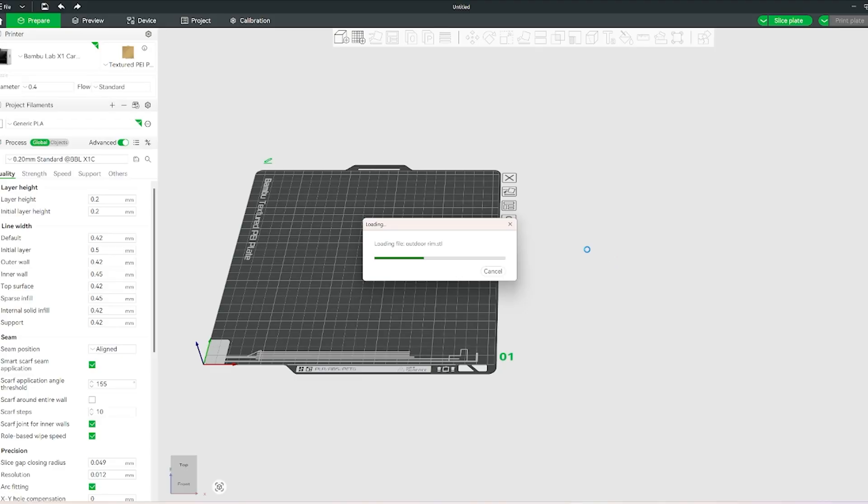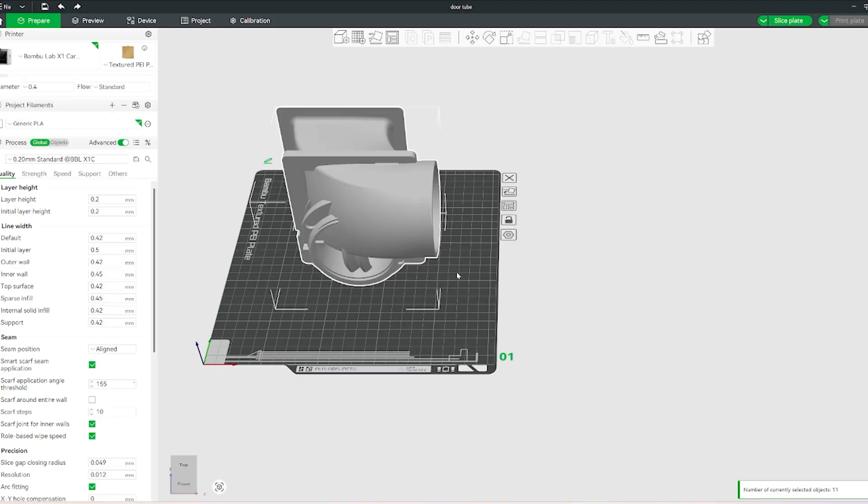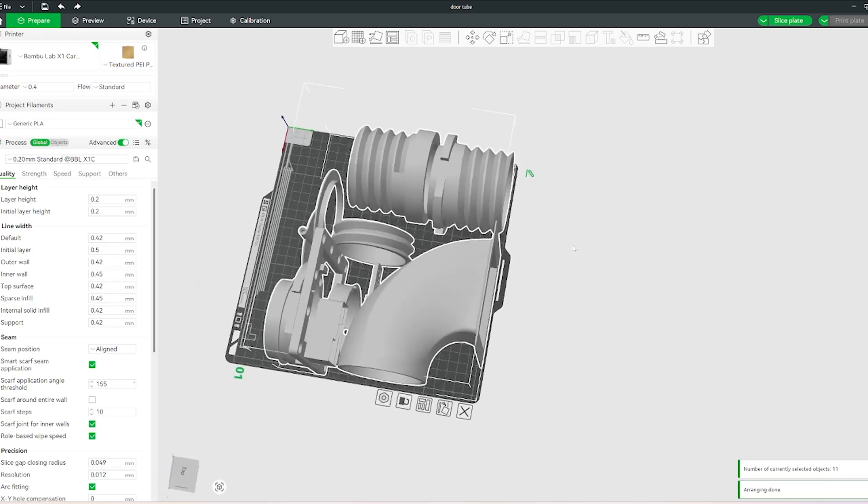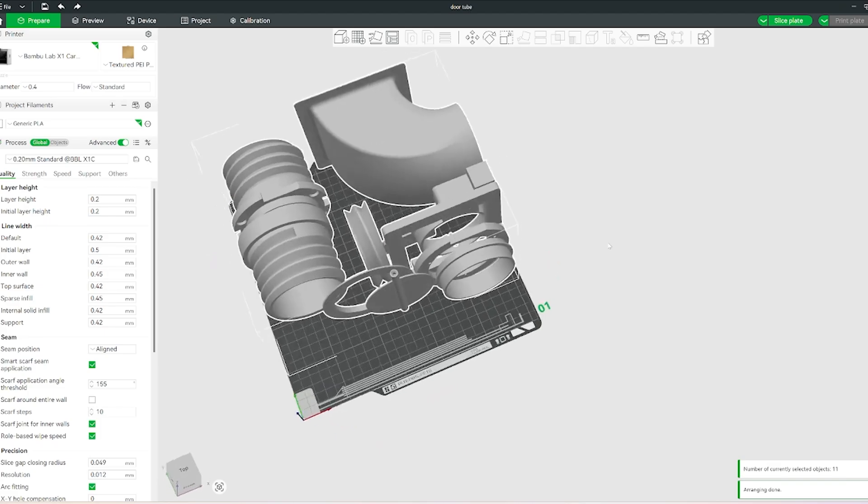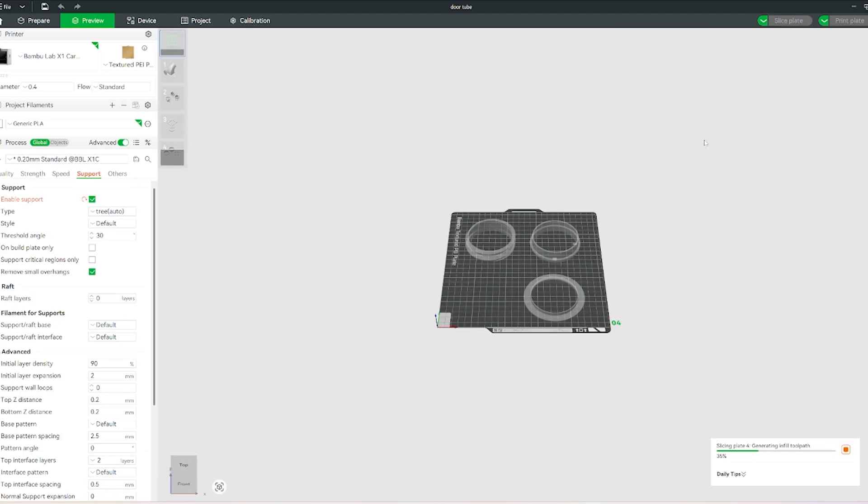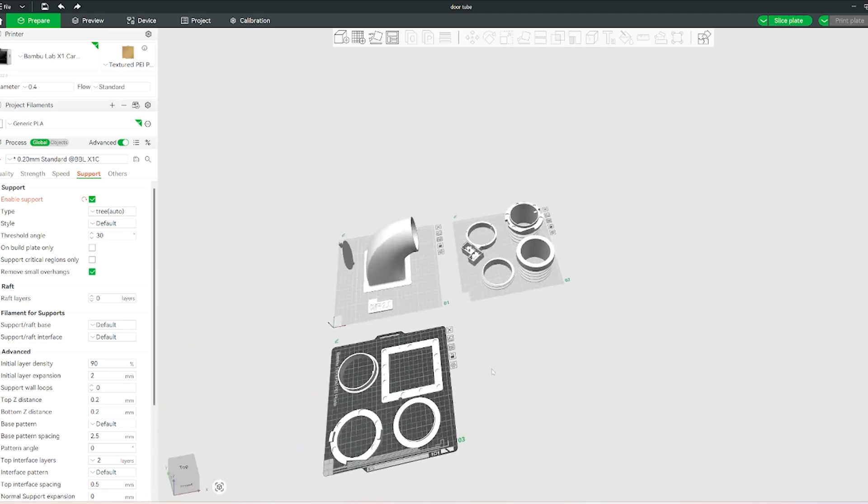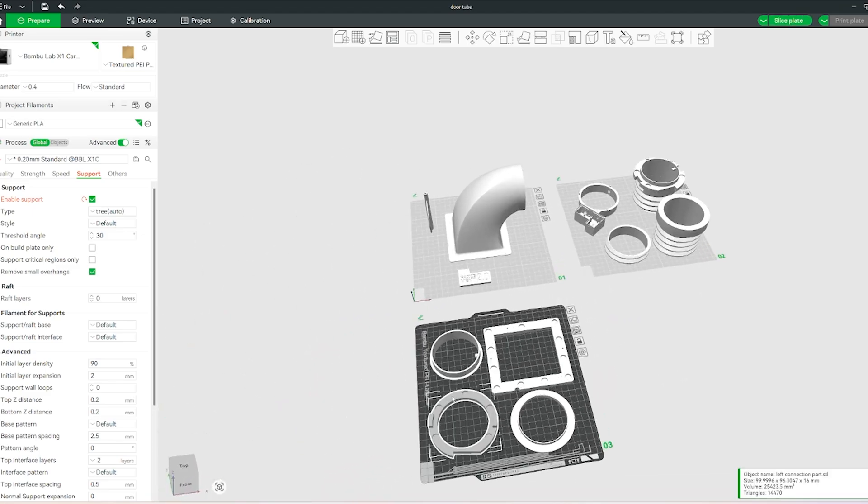And as I promised in the last video, I'll be sharing the STL files this time. Check the description for the link. I'm not sure yet if I'll upload them to Maker World or another repository. All the parts fit on three plates and total print time is about 15 hours with a 0.4 nozzle and 0.2 layer height.